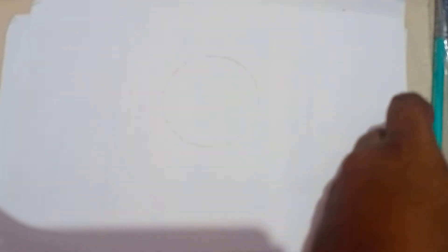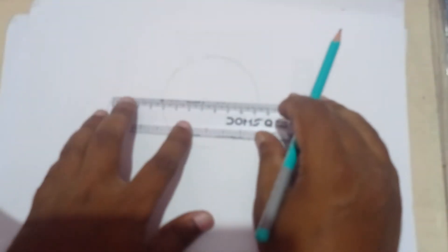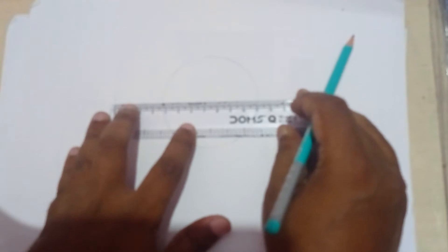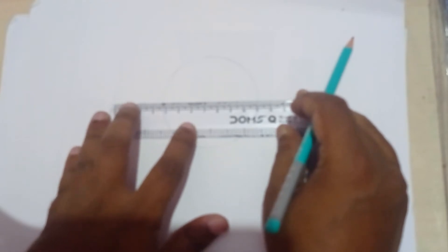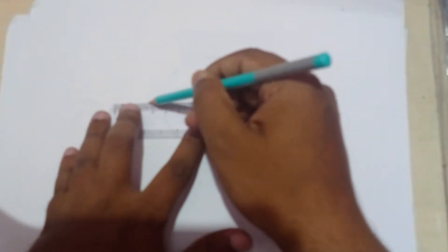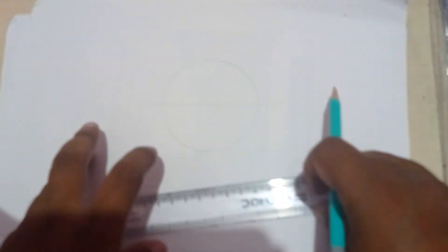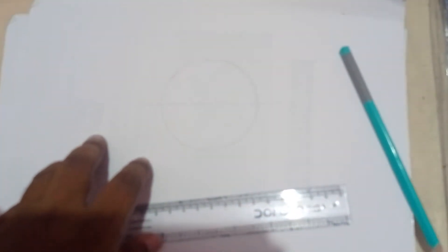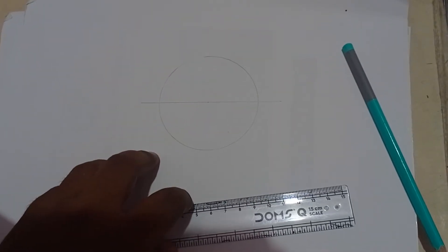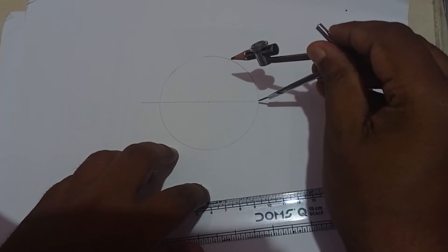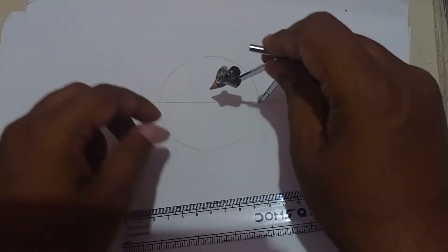After you've drawn the circle, take the scale and draw a horizontal line. After that, take the compass from this end.